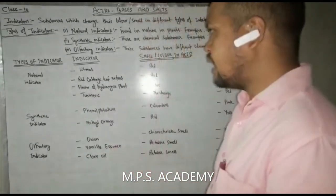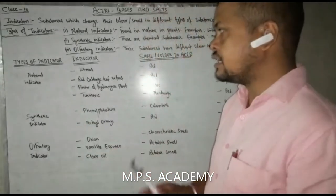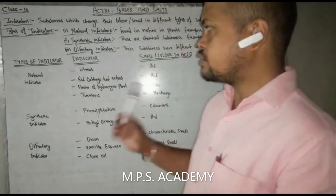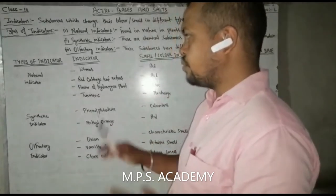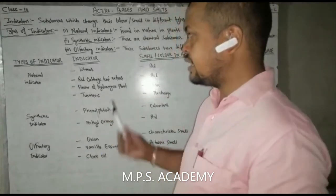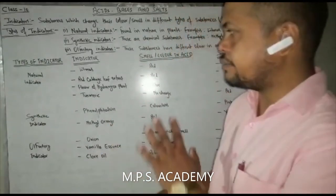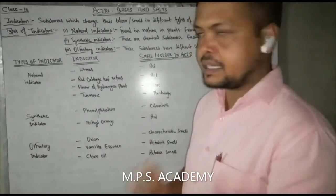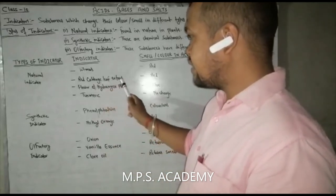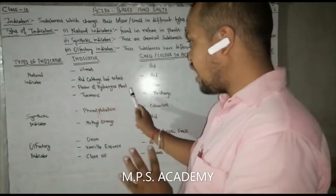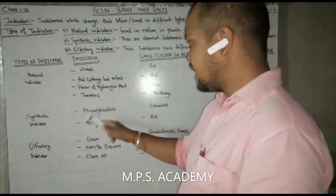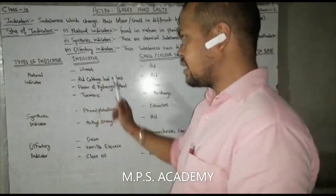Now let us talk about natural indicators. Natural indicators include litmus, red cabbage leaf, the flower of the hydrangea plant, and turmeric.